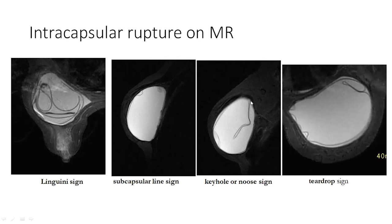The keyhole or noose sign is where we see this loop or noose of the silicone polymer capsule, and instead of the sides being adherent to each other with no brightness in between as we'd see on a normal radial fold, we do see bright silicone in between these two layers of the polymer capsule suggesting intracapsular rupture. Here we see the teardrop sign — this teardrop dot of silicone in between the silicone polymer capsule — as well as multiple subcapsular line signs, all consistent with intracapsular rupture of silicone implant on MRI.